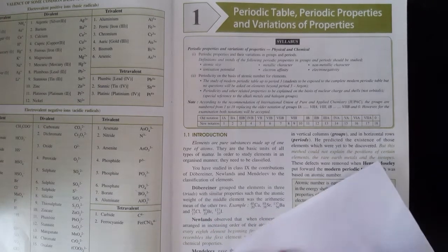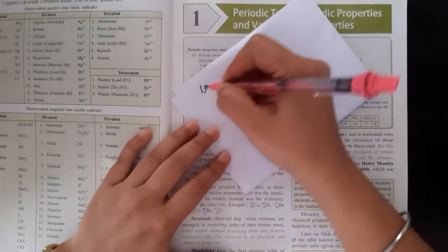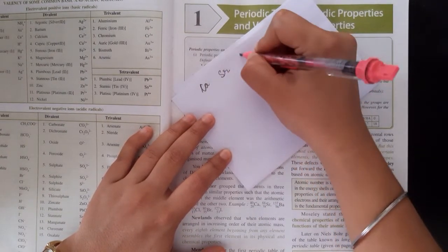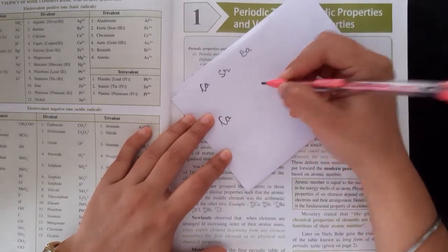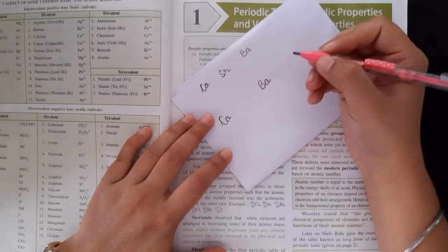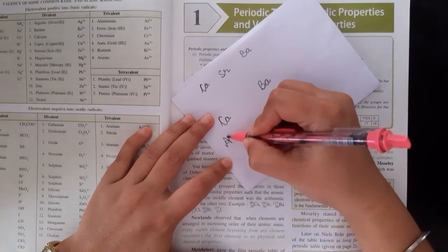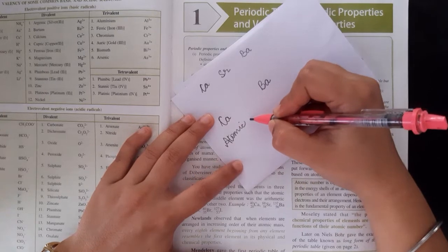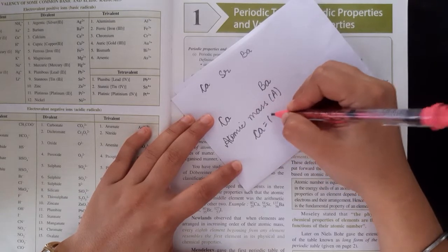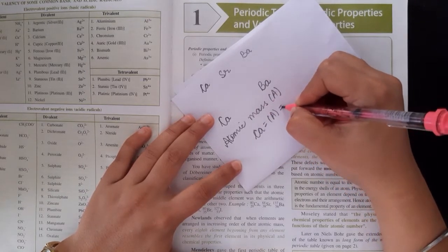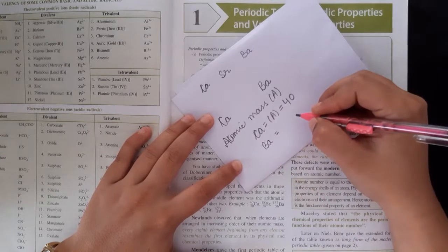He took the three elements Ca, Sr and Ba. He took both and took the atomic mass. Atomic mass means capital A. Ca ka capital A means mass. What is the mass of Ca? 40 and Ba that is...